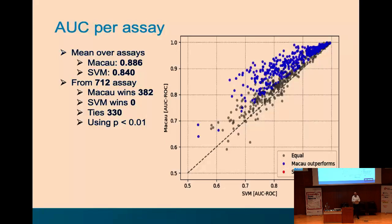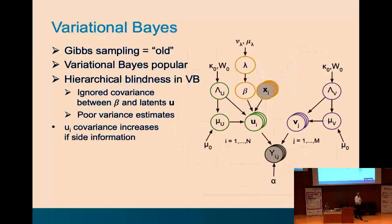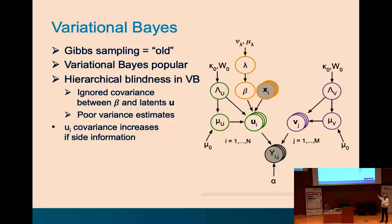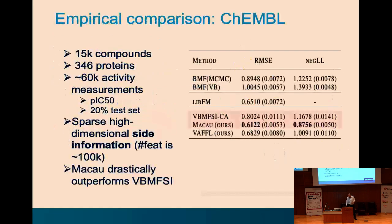We also compared against variational Bayes, a more modern alternative to Gibbs sampling that uses approximations for efficiency. We observed what we call hierarchical blindness — variational Bayes cannot propagate information properly through the model. In practice, our Gibbs sampling method outperformed variational Bayes, which is important because variational Bayes is considered state-of-the-art or close to it.